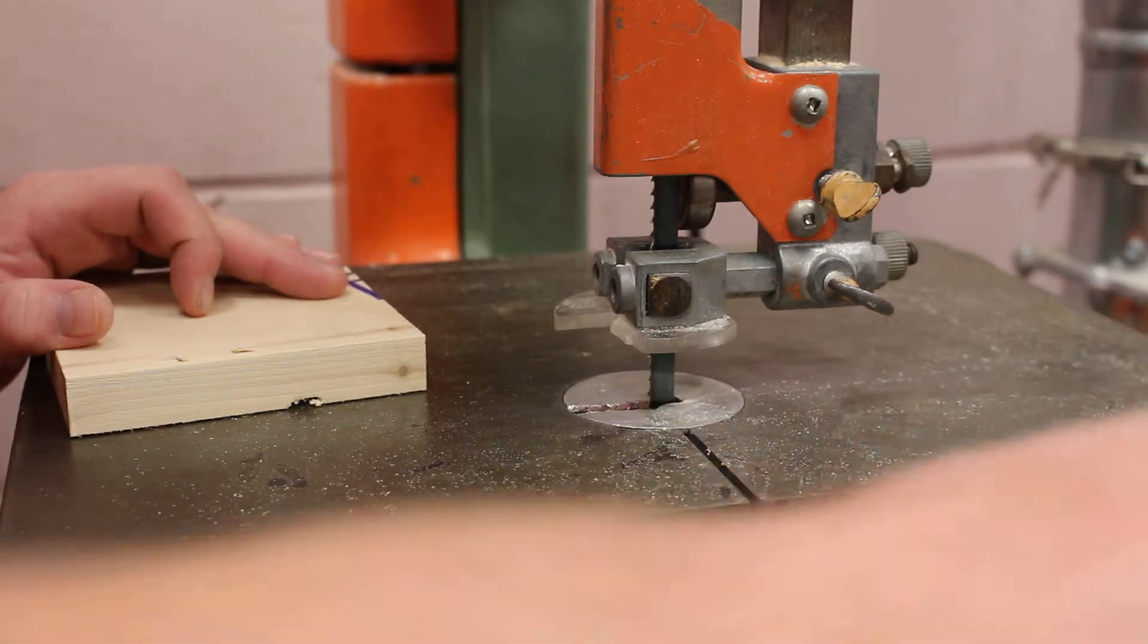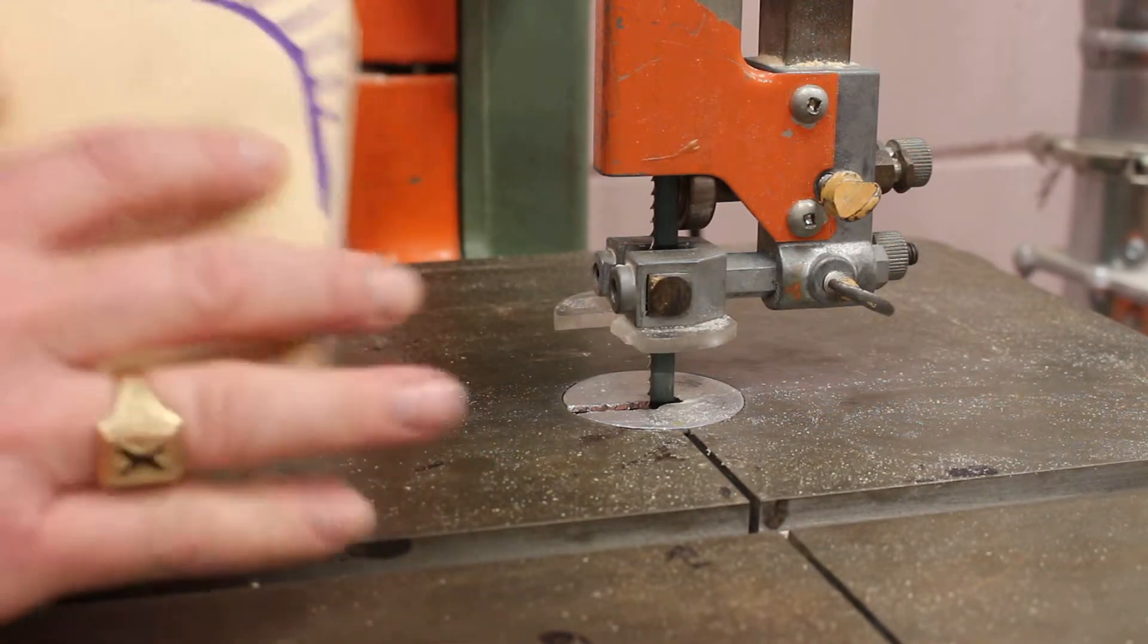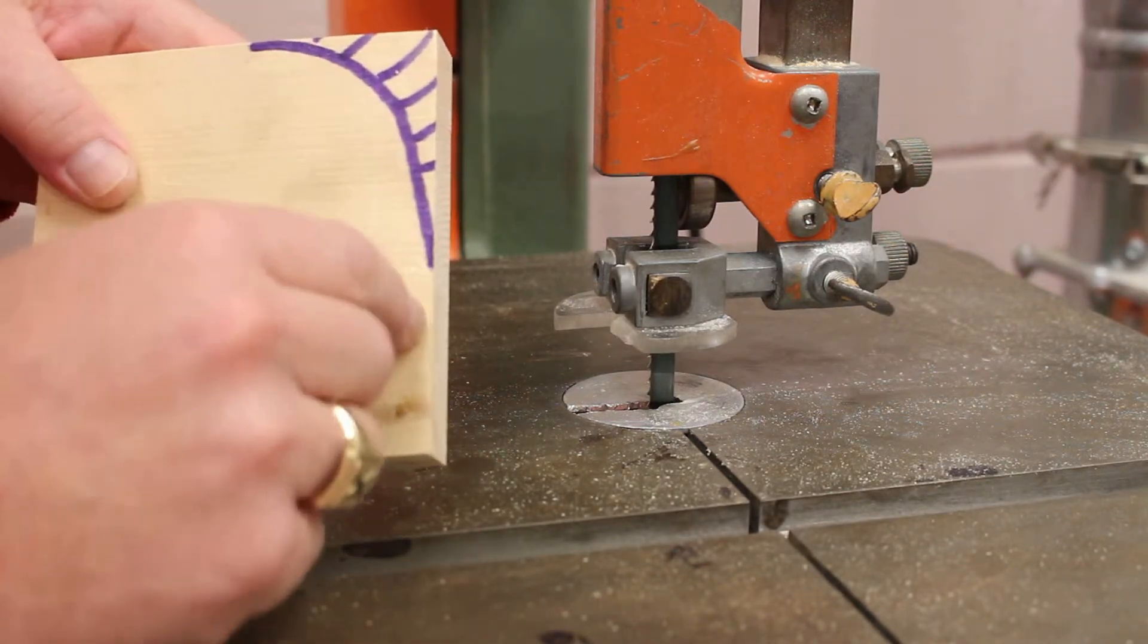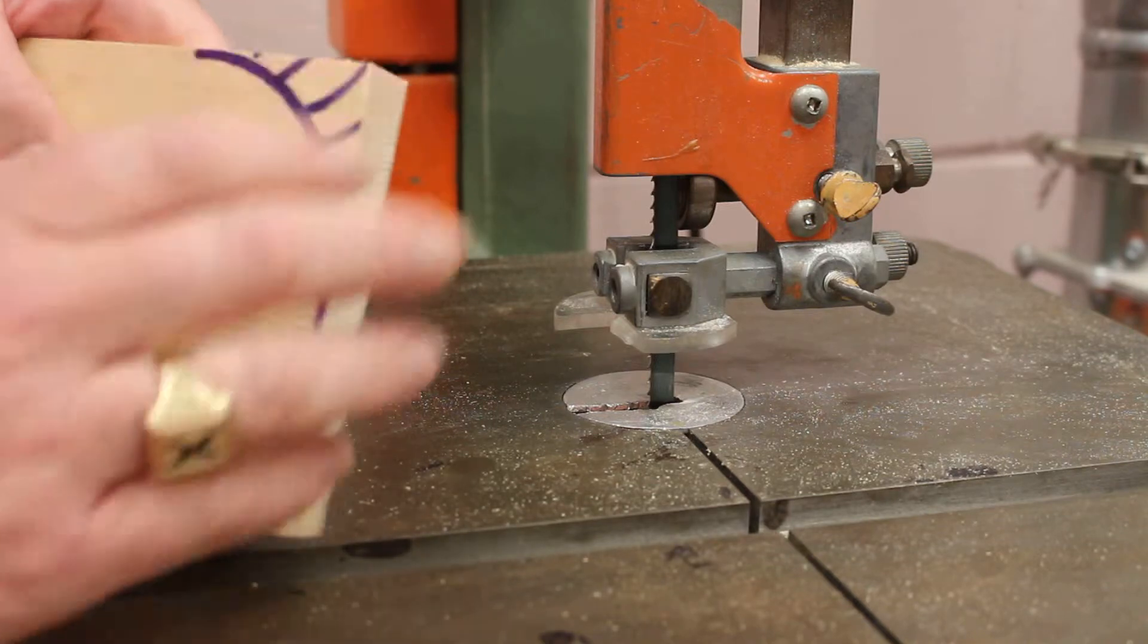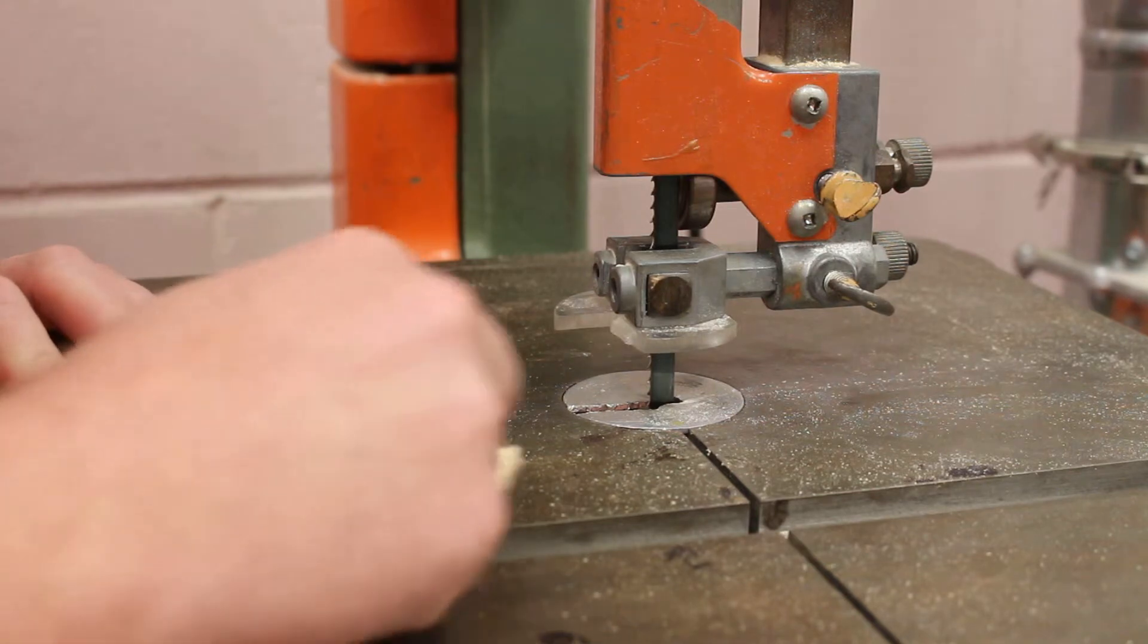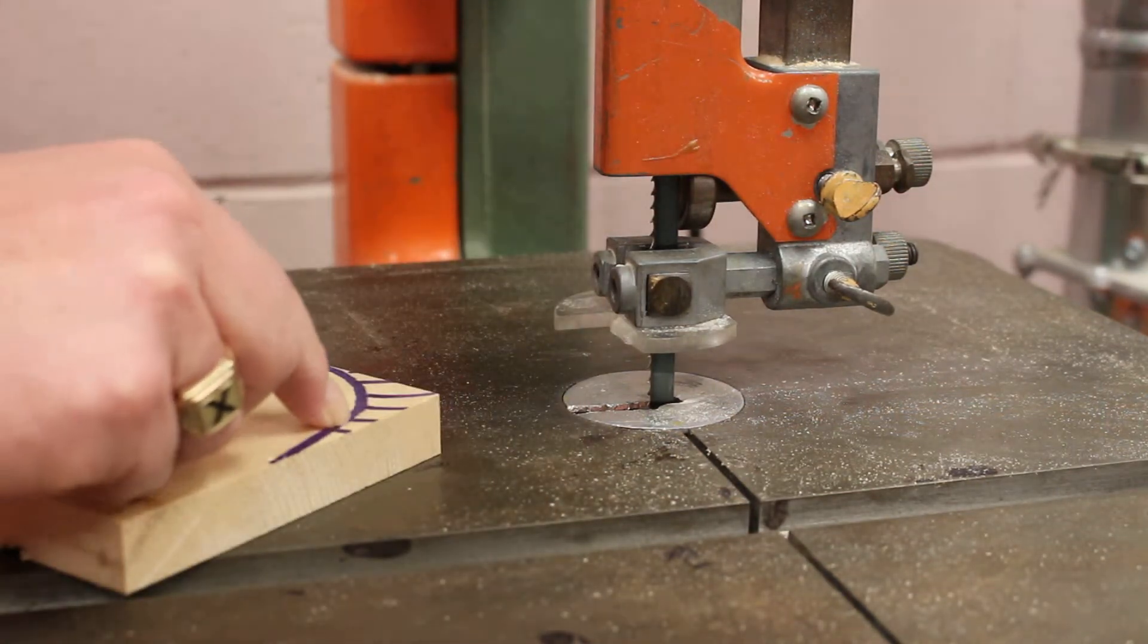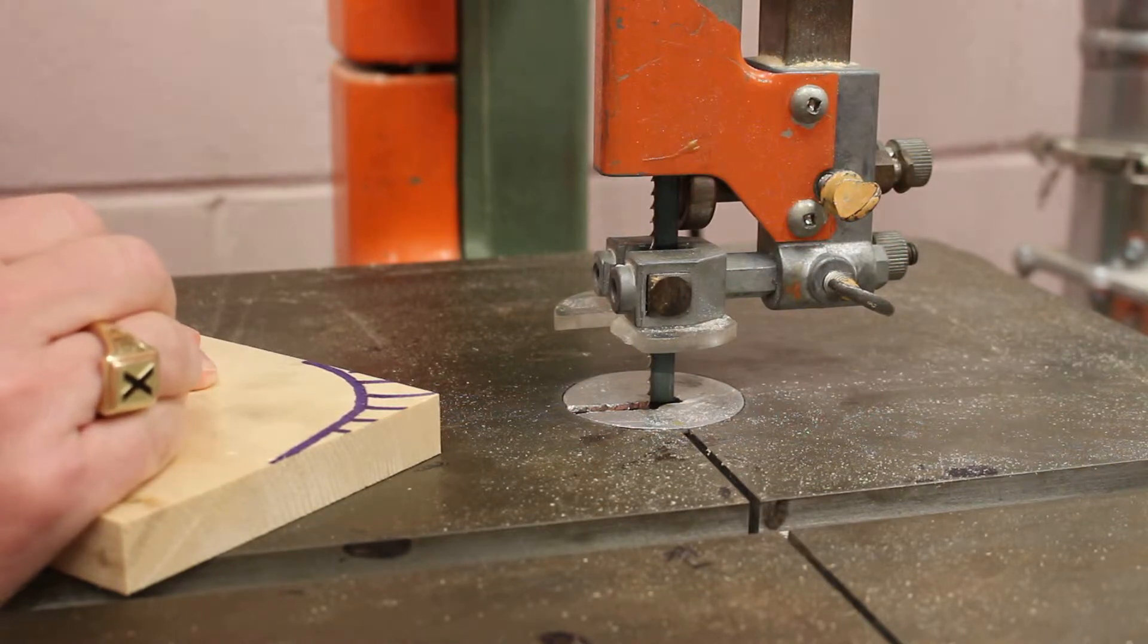The other thing I want to show you: if you're going to cut curves or arcs, you have to make what are called relief cuts. I drew these lines on there, and once I have those cut, you can go around this corner and it won't put a lot of pressure on the blade, and then it won't snap.